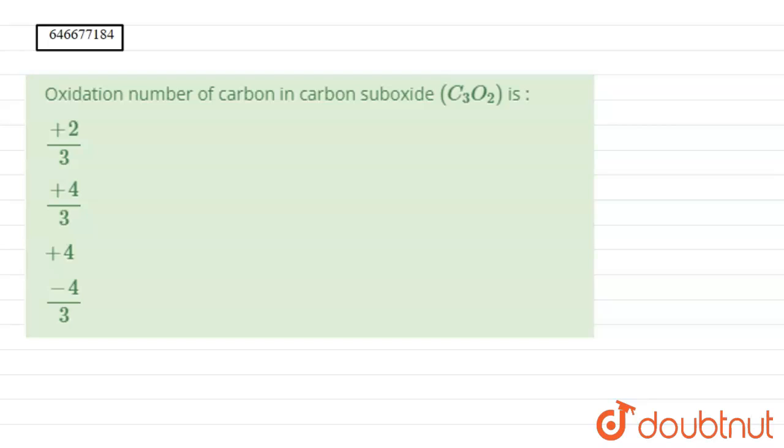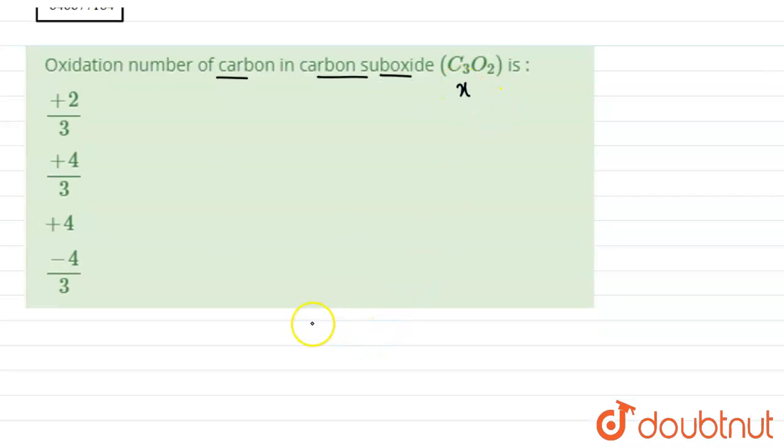Hello students, in the given question we have to find the oxidation number of carbon in carbon suboxide. So we can assume the oxidation number of carbon as x.